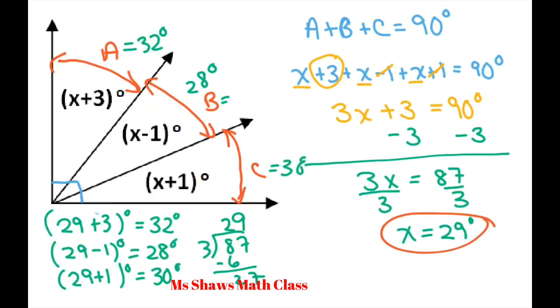And C equals 29 plus 1 degrees, which equals 30 degrees. To check your solution, add them up: 32 plus 28 plus 30 equals 90 degrees.